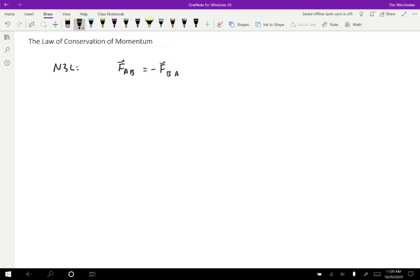So what I'm going to do is integrate both sides of this expression. If I integrate the force on A by B with respect to time, then I get negative the integral of the force on B by A with respect to time.